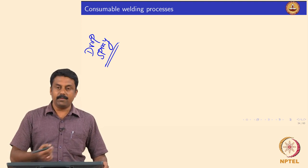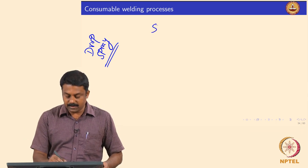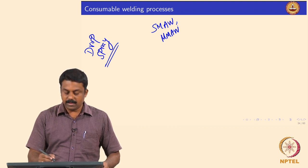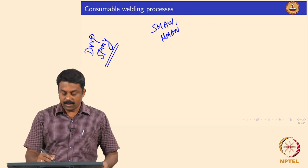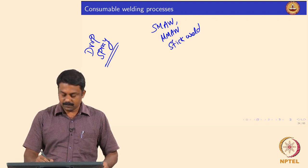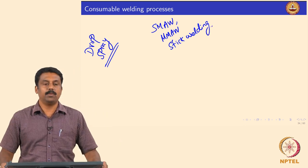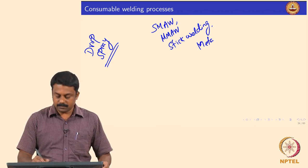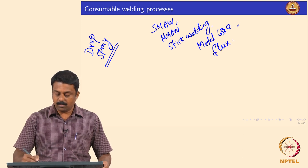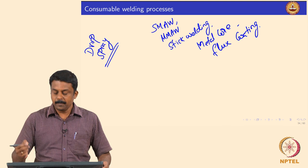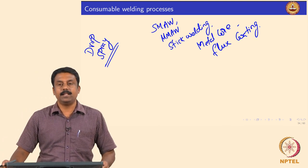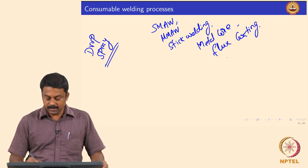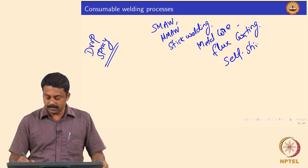For the ideal GMAW case, drop spray just above spray transition is very widely used. Then we move on to SMAW — also known as MMAW, shielded metal arc welding, manual metal arc welding, or stick welding. In SMAW, the consumable welding electrode is discontinuous; it has a metal core with a flux coating. In most cases, SMAW is a self-shielding process, meaning no external shielding gas is used.